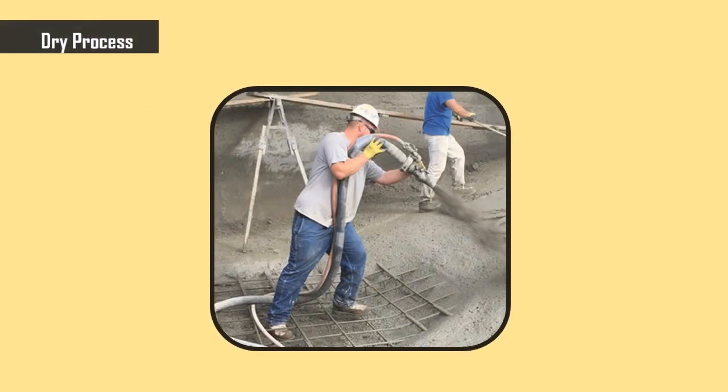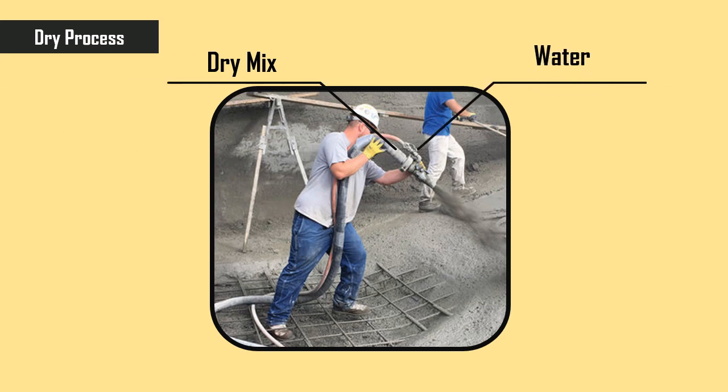In the dry process, a predetermined dry mix of cement and aggregate is propelled through a spraying nozzle, where a finely atomized spray of water is added to the stream of materials before being sprayed.